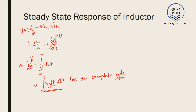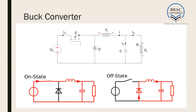We have now learned all the basic terminologies required for detailed analysis of DC-DC converters. We move to the first converter, which is the buck converter. What a buck converter does is convert to an output voltage that is smaller than the input voltage — the input we provide will always be larger than the output we get. The circuit arrangement has a MOSFET switch, a diode, an inductor, and a resistance-capacitance combination acting as a load.